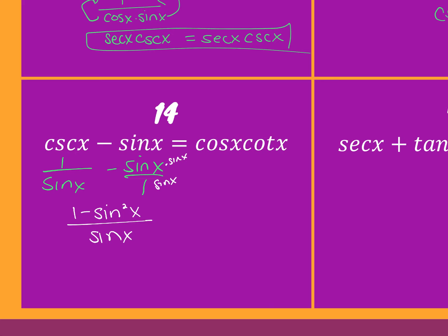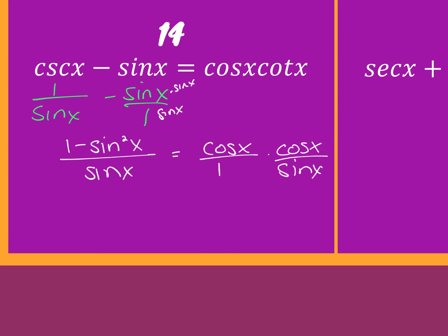And then the other side, I need cosine of x over one, times cosine of x over sine of x. And for that side, you get cosine squared x over sine of x. And then one minus sine squared of x is cosine squared of x. Good job — and then over sine of x, equal. Good job.